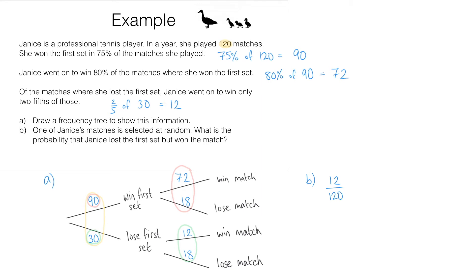That's a correct probability. We can simplify this fraction if we like. That simplifies to one tenth. We could write that as a decimal, 0.1, or we could write it as a percentage, 10%. What we did here was spot that there were 12 matches we were interested in based on the question out of 120 matches in total. So that's why the probability was 12 over 120.